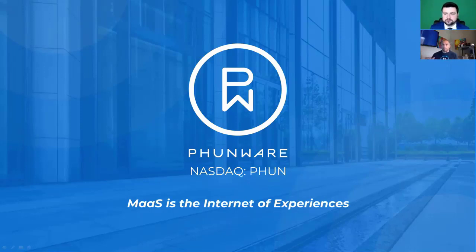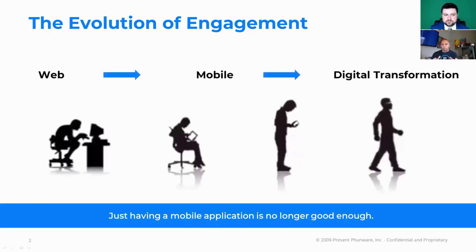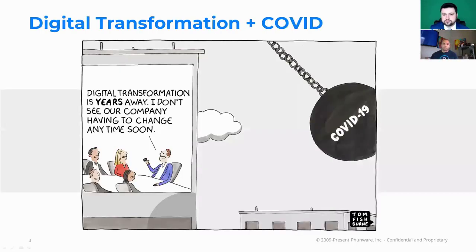It's a relatively new term. Everybody's more familiar with the internet of things, but I'll explain what internet of experiences means in our context. The evolution of engagement has changed over time. When we first got our start, we were building mobile applications — pivoting large brands off web onto mobile, shrinking your desktop experience down to the size of a phone. That lasted about ten years. Right now we're seeing another transformational shift into digital transformation, which means just having a mobile application is no longer good enough.